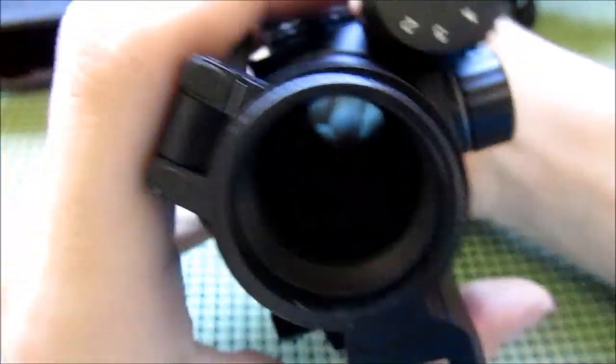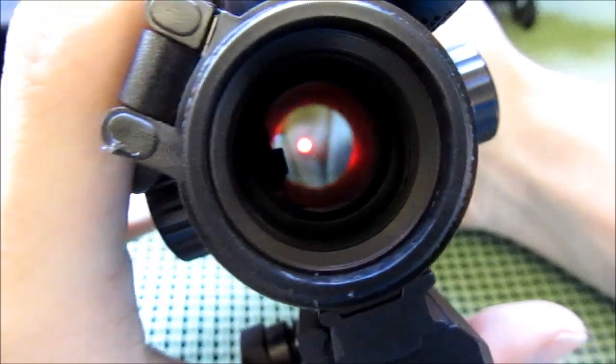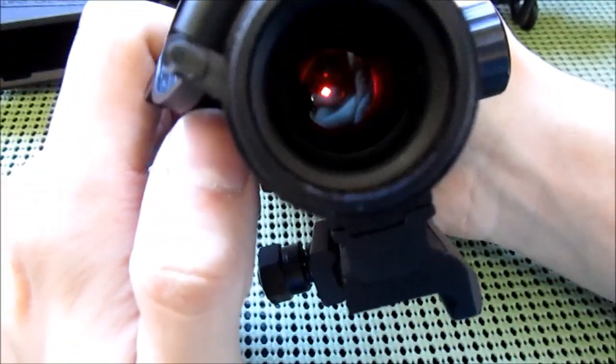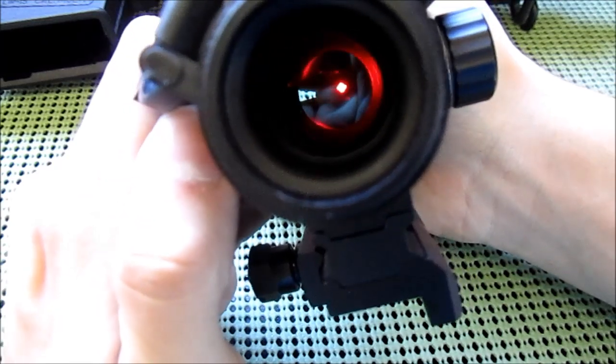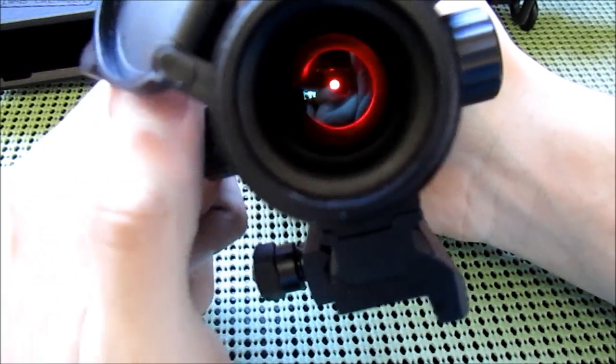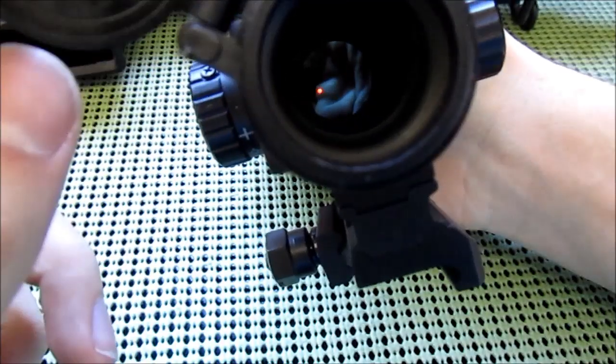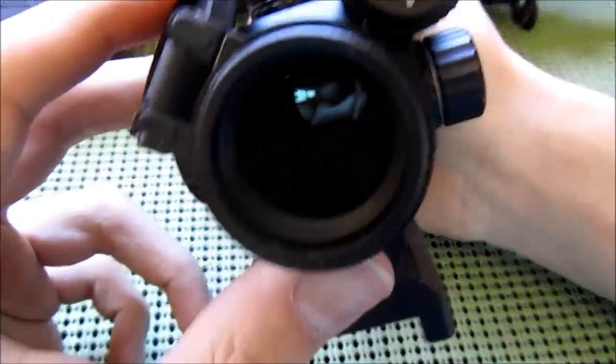That's supposed to be the plus, but I don't think you guys can see that very well. Plus the circle, plus thing, and then the circle and the dot. You just rotate this knob here on the side and it changes it.